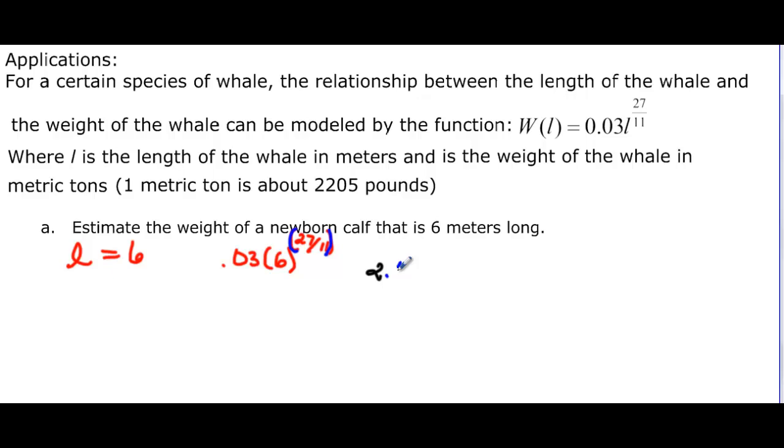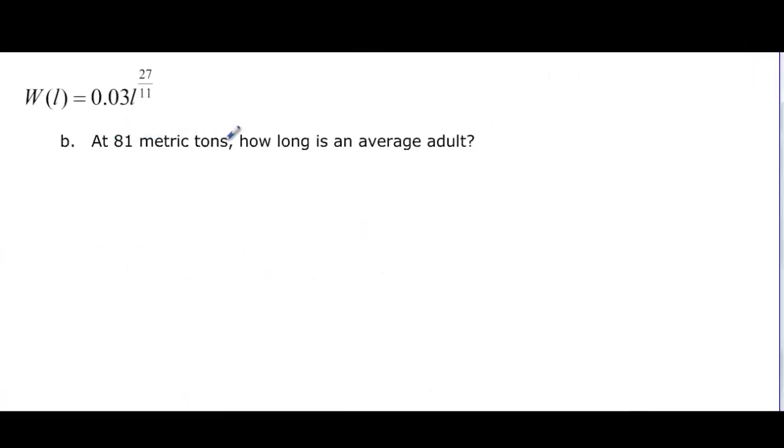At 81 metric tons, how long is an average adult? So this time we have 81 on the other side, and 0.03 l to the 27 over 11. We know we can divide off the 0.03, and that's going to be equal to the l to the 27 over 11. So when you take the 81 and divide it by 0.03, you get 2700, and that's equal to l to the 27 over 11.